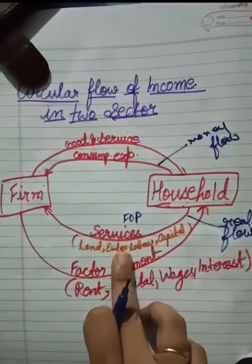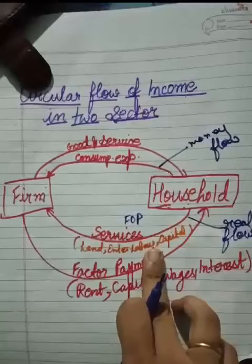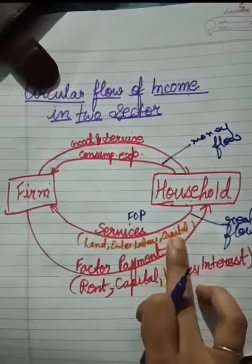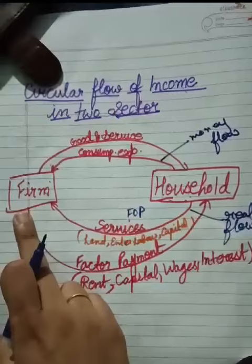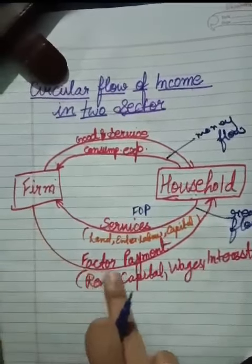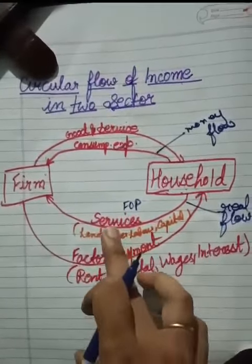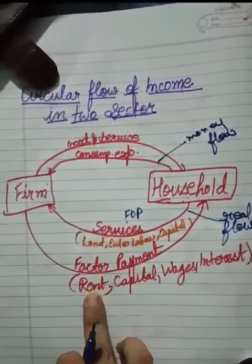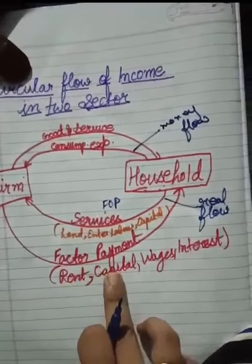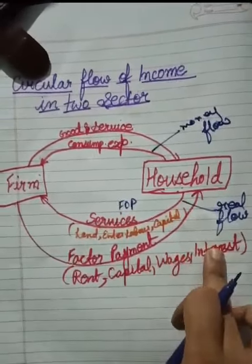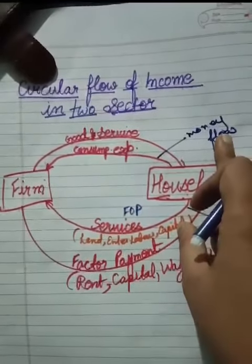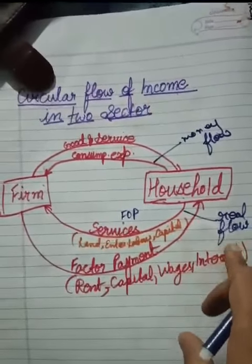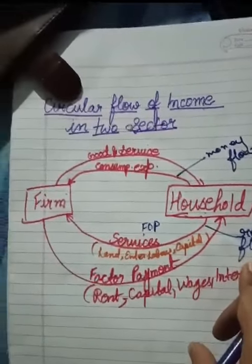...entrepreneur, labor, and capital. In return, the firm provides factor payments, commonly known as rent, wages, and interest. These two flows show the money flow, and the other two show the real flow. Thank you.